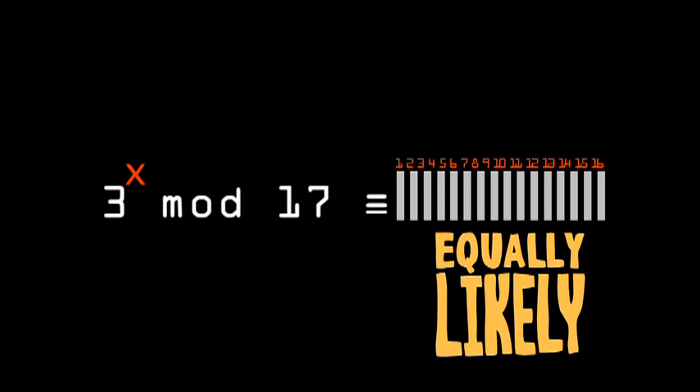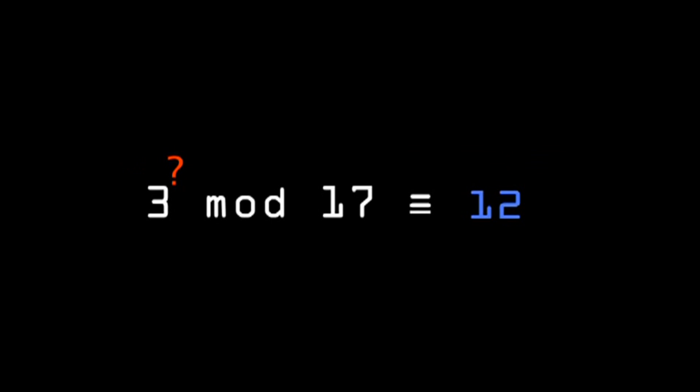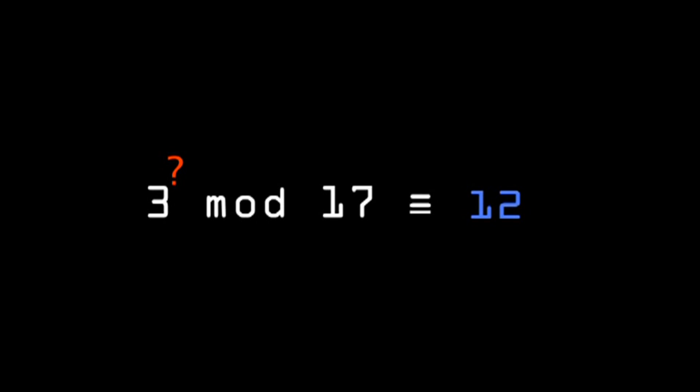Now, the reverse procedure is hard. Say, given 12, find the exponent 3 needs to be raised to. This is called the discrete logarithm problem. And now we have our one-way function.